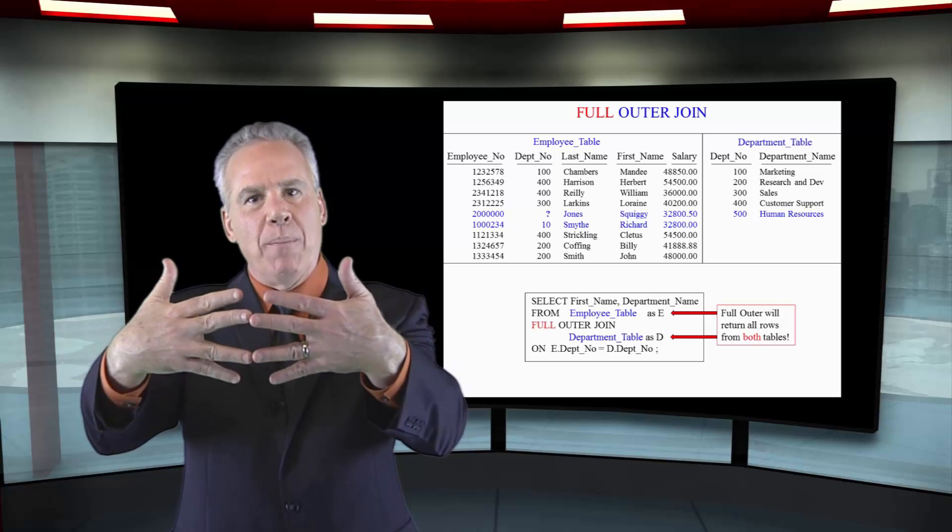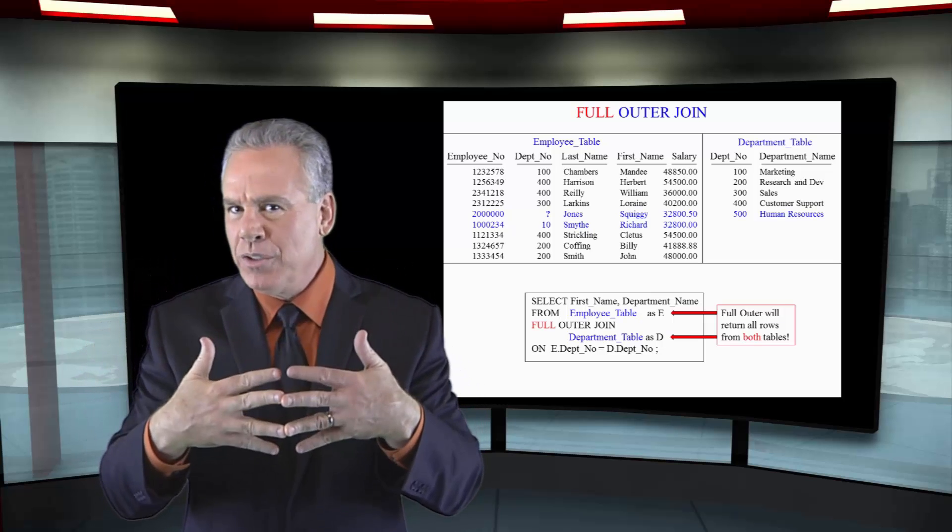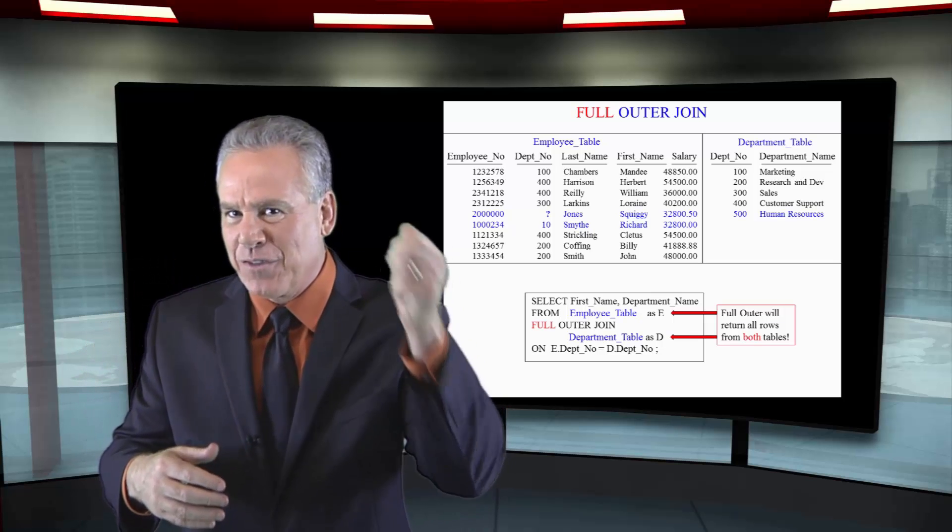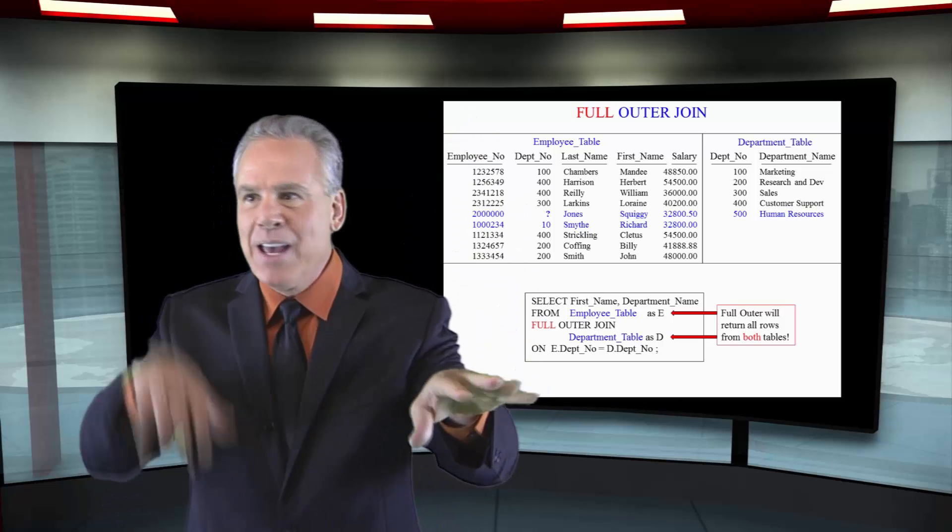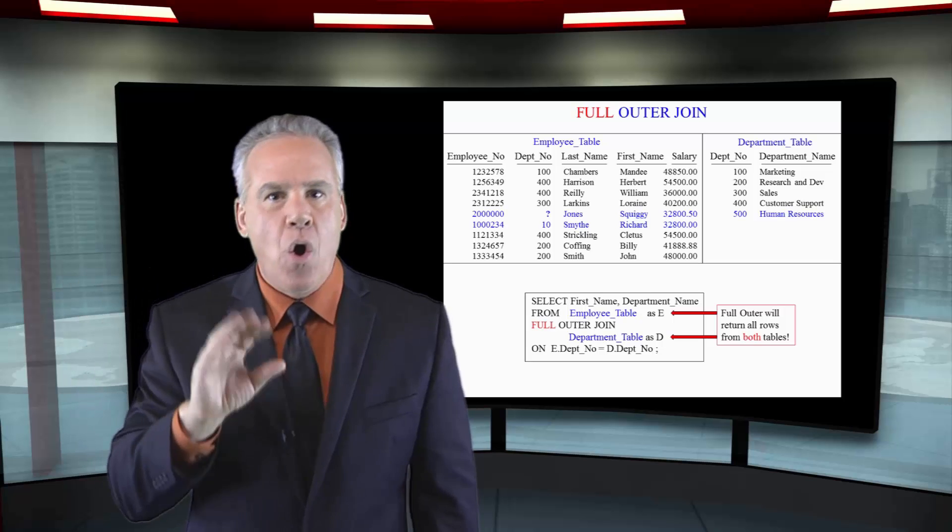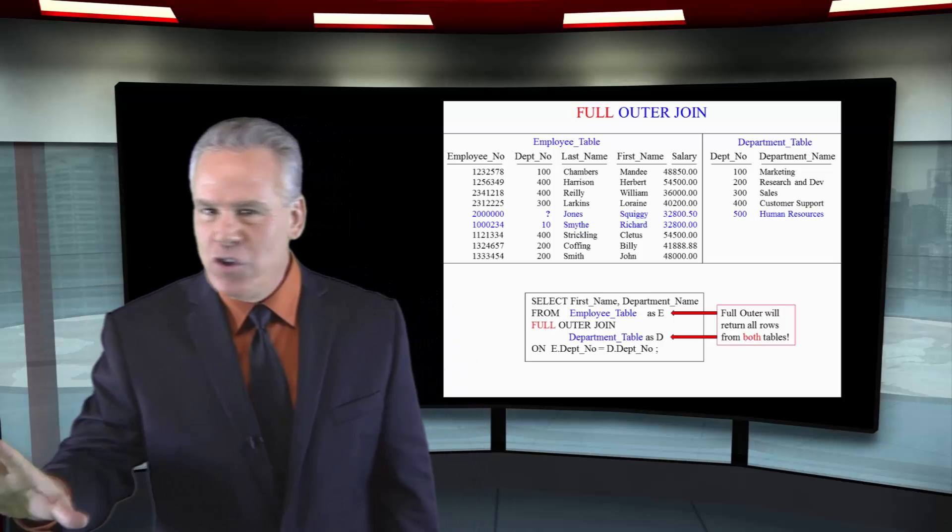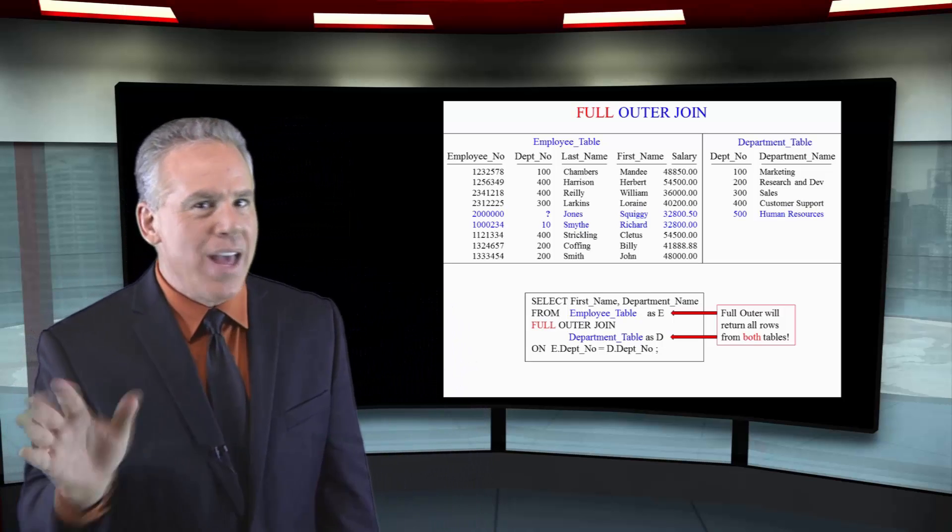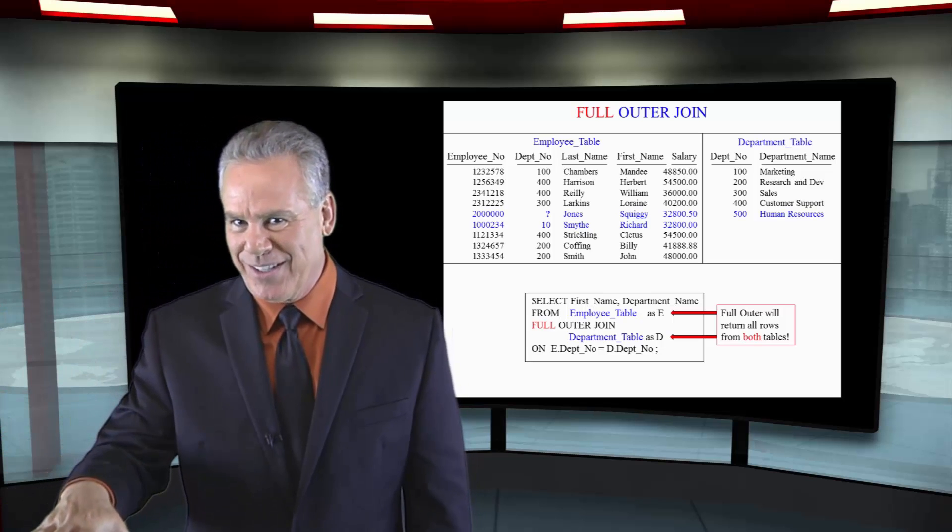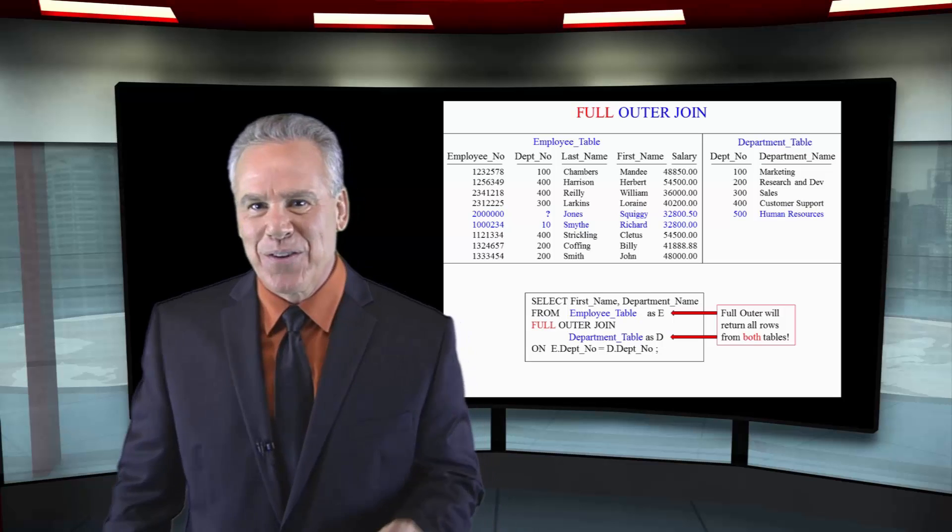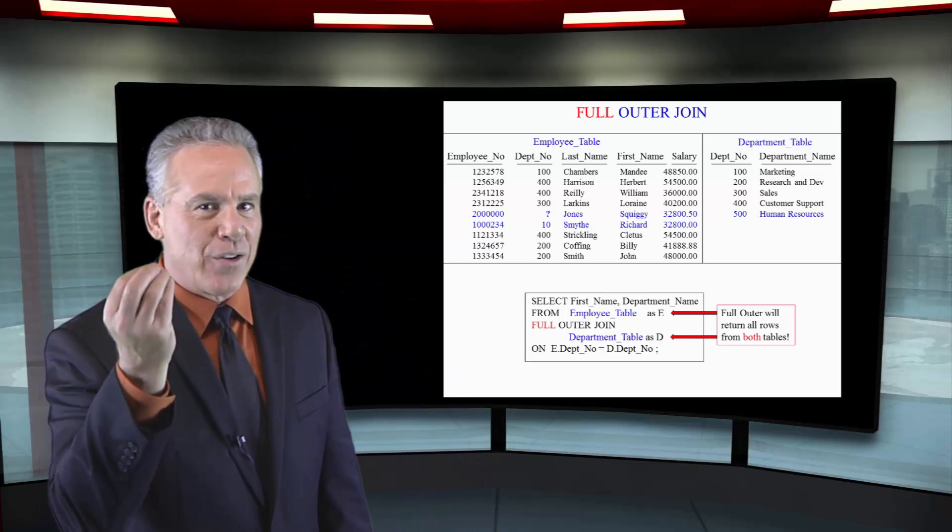First, the system brings back all the matches. Then there's a problem: no matches for Richard Smythe and Squiggy. No problem - bring those first names back and put NULLs in their department name. And there's another problem: Human Resources in the department table didn't have a match either. No problem - bring back Human Resources and put NULLs in the first name. That's a full outer join.